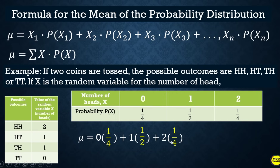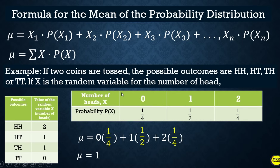You can compute this mentally or use a calculator. Zero times one-fourth is zero; one times one-half is one-half; two times one-fourth — we can simplify to one-half. So one-half plus one-half gives us one. The mean of this discrete probability distribution is one.